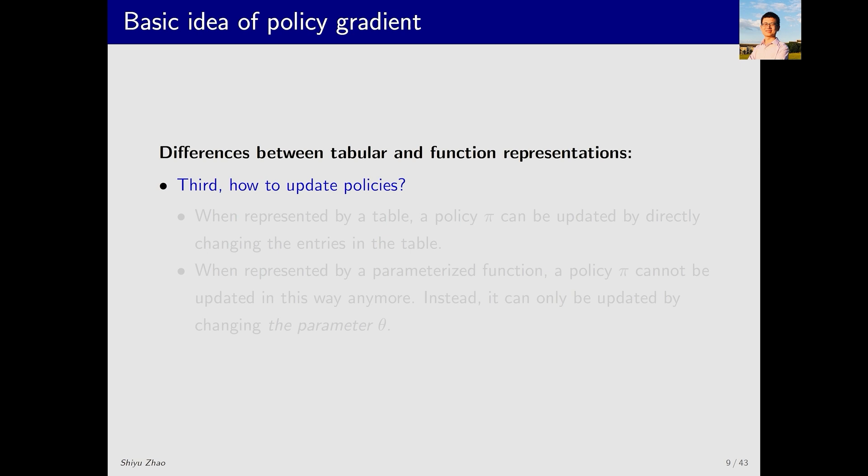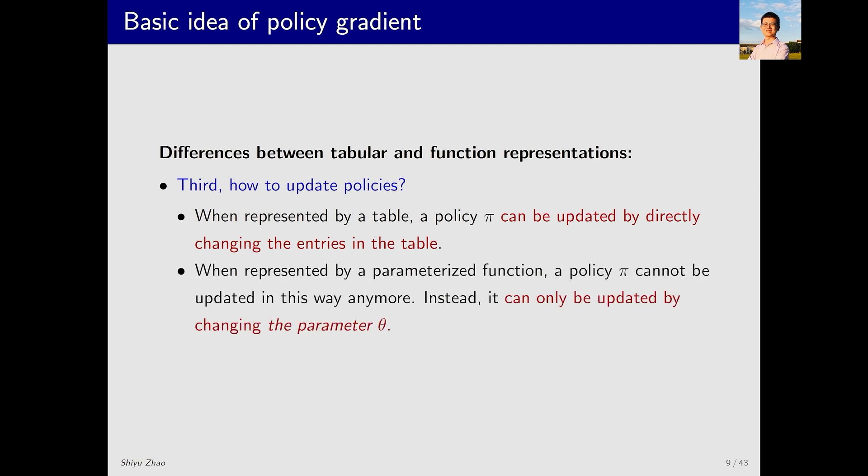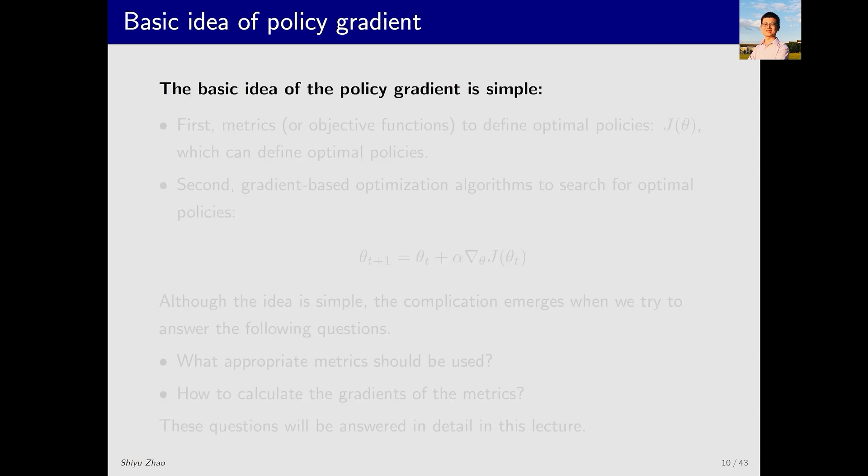The third difference is similar to the second, but it is about how we update policies. When represented by a table, as we discussed before, a policy π can be updated by directly changing the entries in the table. It's very straightforward. But when represented by a parameterized function, this is not the case. Once the structure of the function is fixed, the function is purely represented by the parameters θ. If we want to change π(a,s), we cannot directly change it to a new value. We can only change π(a,s) indirectly by adjusting θ. These are the three basic differences between using a table and using a function.